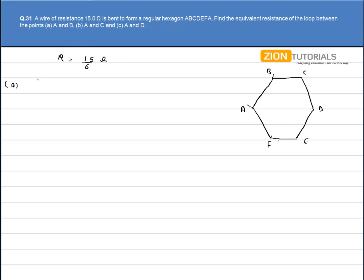So we have R equivalent as 5R into R divided by 5R plus R. This is nothing but the equivalent of 5 series resistances and its parallel combination with a single R.